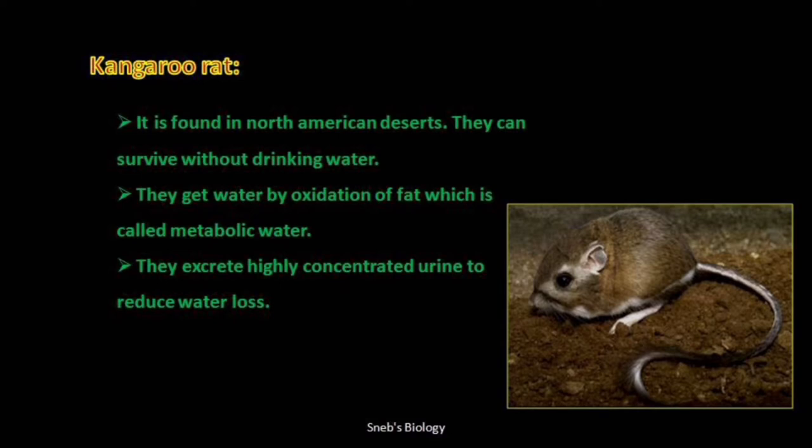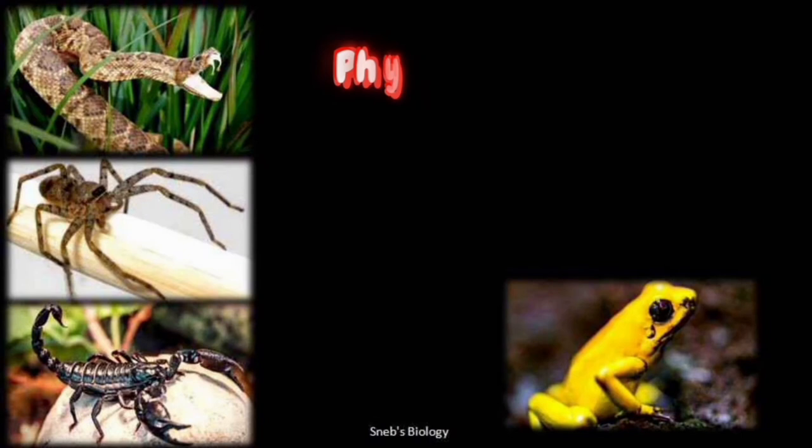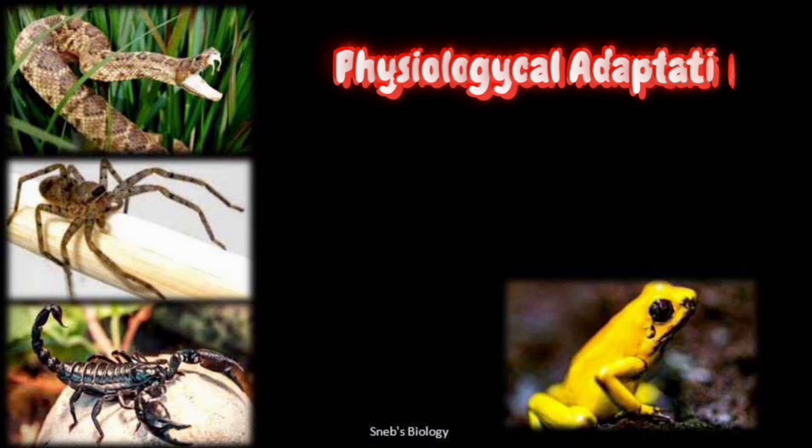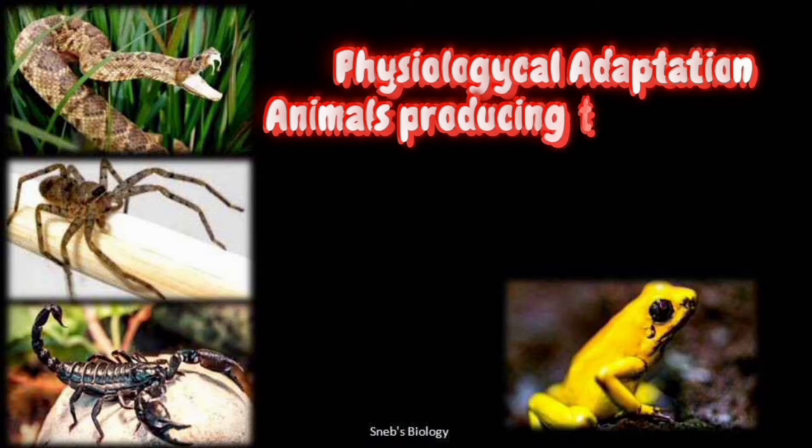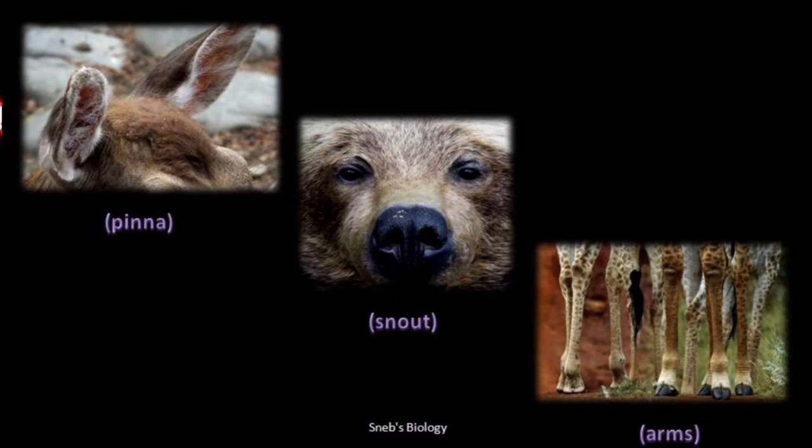One more adaptation is where animals produce toxins or poisons — examples include snakes, spiders, frogs, and scorpions. This is also a physiological adaptation.